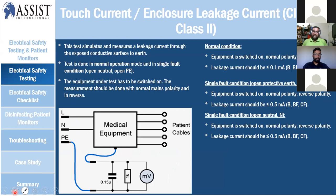For touch current, this measurement applies to both Class 1 and Class 2 devices. In normal condition, the leakage current from the protective earth to the equipment's touch point is measured. For B, BF, and CF applied parts in normal condition, the leakage current should be less than 0.1 milliamperes. For single fault condition with open neutral on Class 1, it should be less than 0.5 milliamperes.